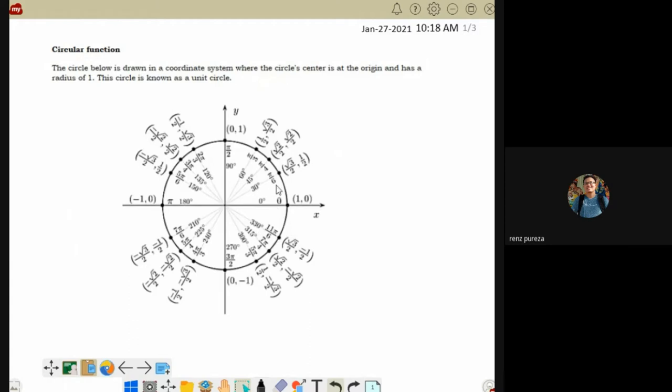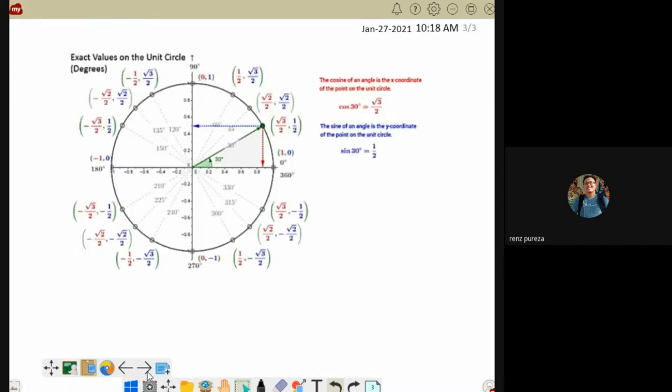Using the unit circle, we can identify the range with the domain of 30, 45, 60, 90, 120. This is our domain. We can have the range.